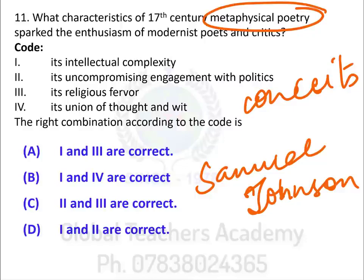The options are presented as a code: 1. intellectual complexity, 2. uncompromising engagement with politics, 3. religious fervor, 4. union of thought and wit. The correct combination is A: 1 and 3; B: 1 and 4; C: 2 and 3. Metaphysical conceits involve combining scientific concepts with unexpected objects, and there is also a large amount of wit involved. So the answer is option B — intellectual complexity and its union of thought and wit.